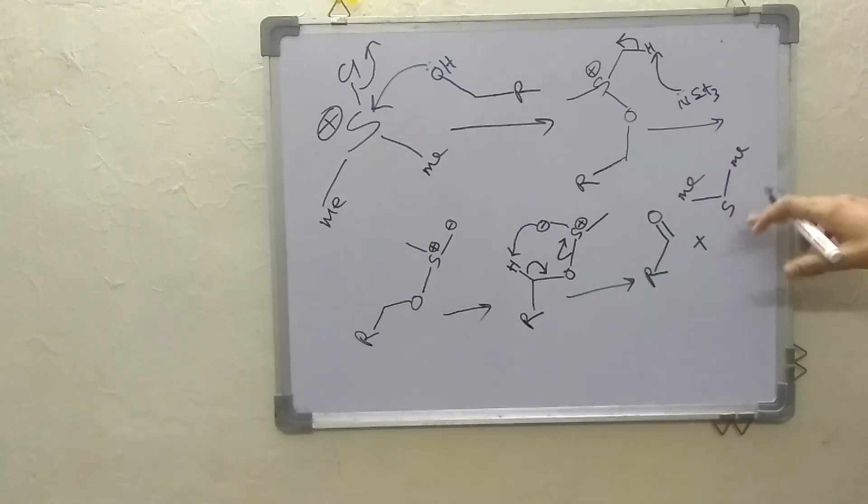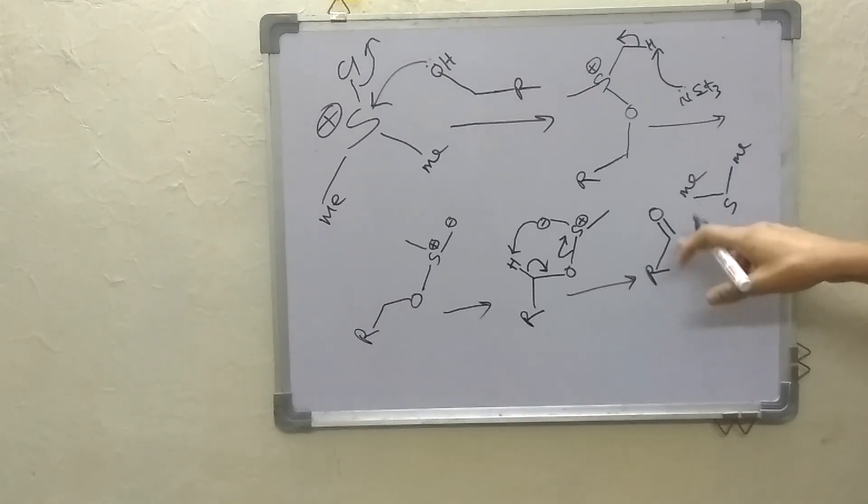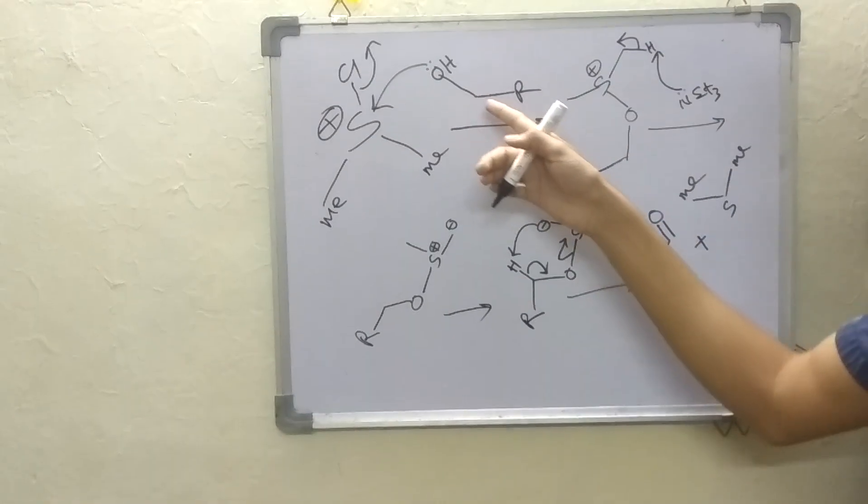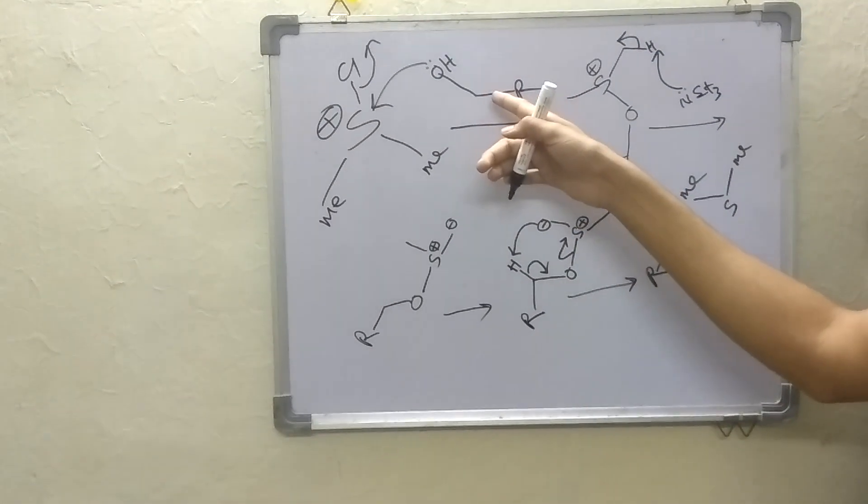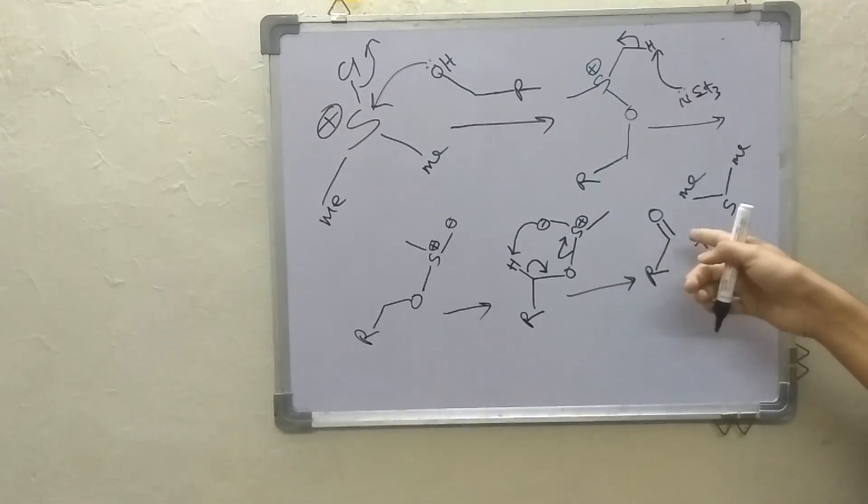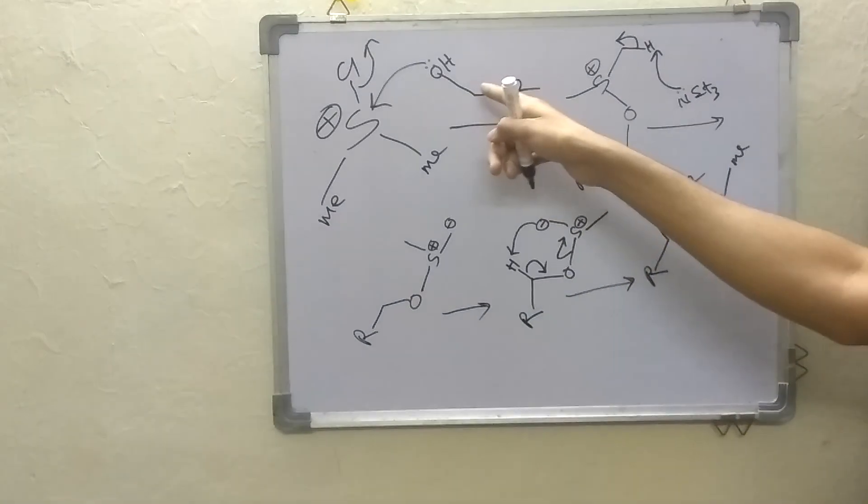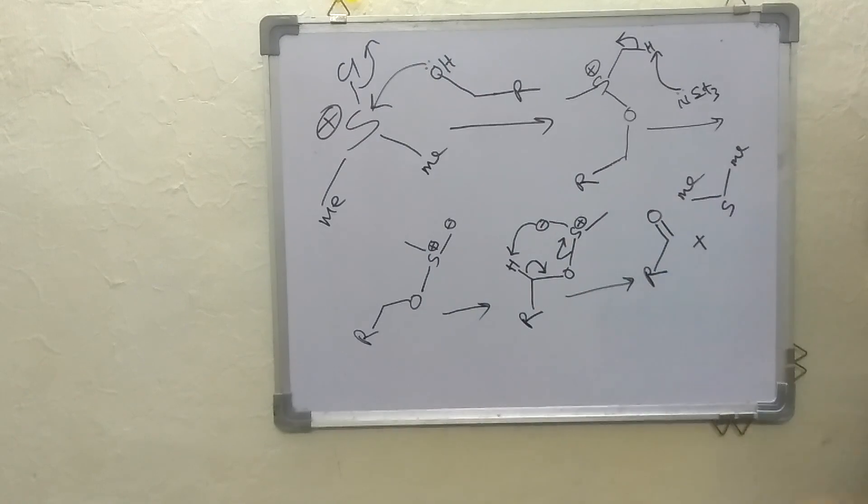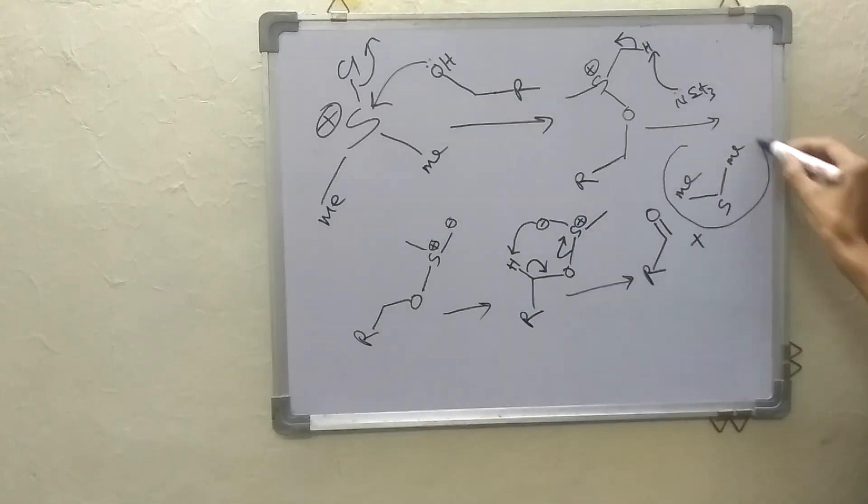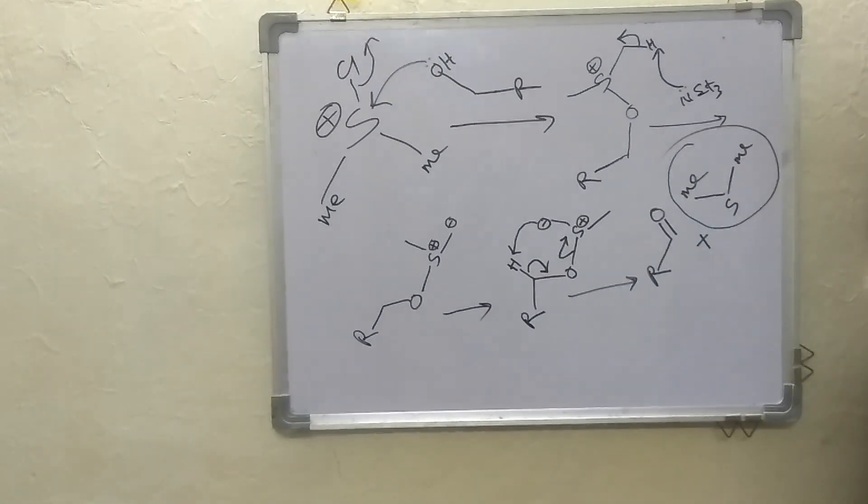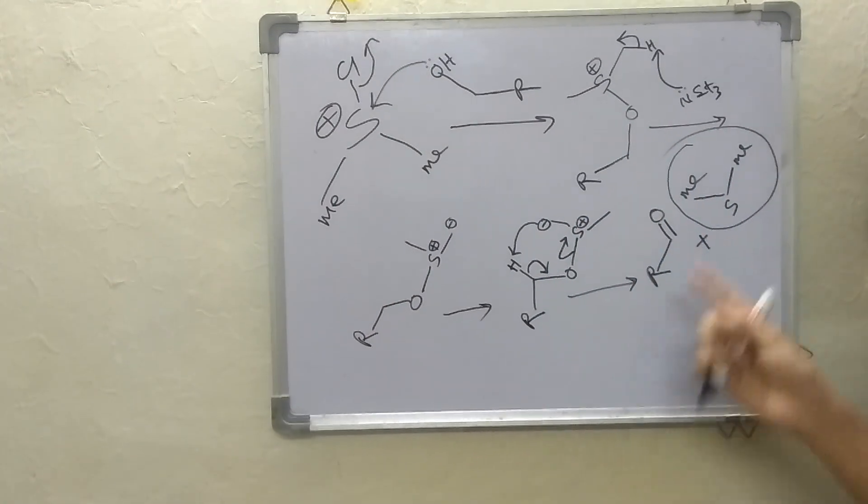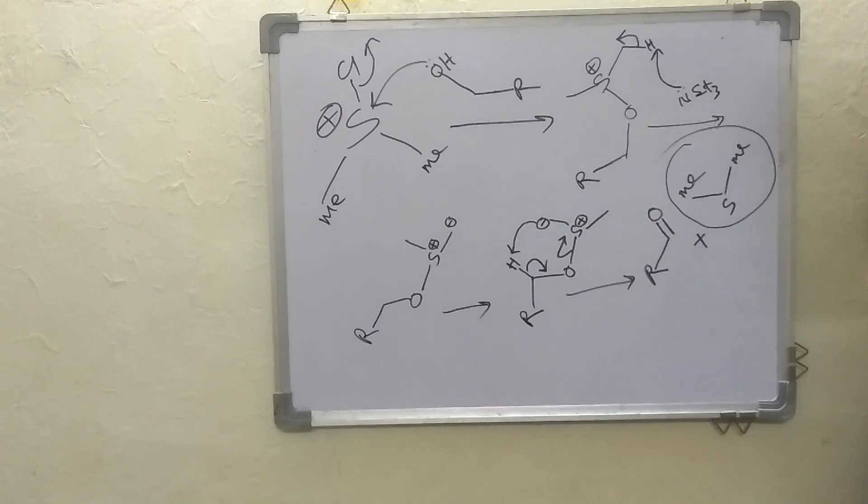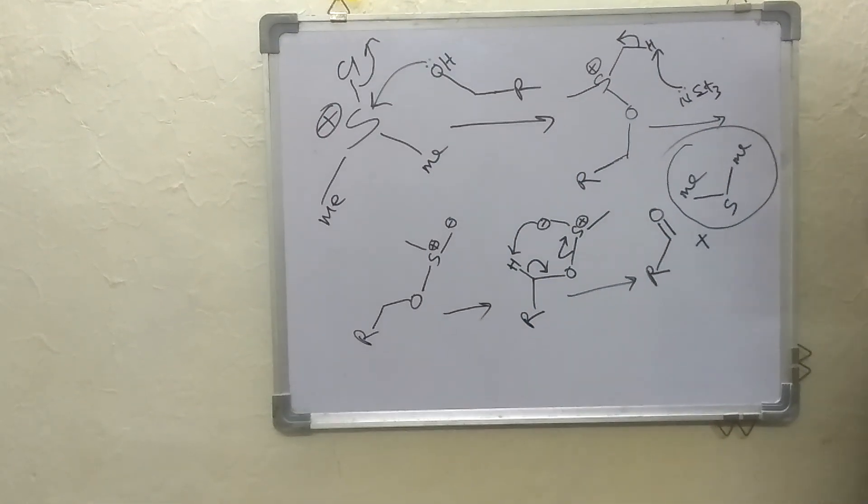This is dimethyl sulfide and we get our desired aldehyde. So if we start from secondary alcohol then we would get ketone but as we started from a primary alcohol we would get aldehyde. And this compound dimethyl sulfide has a very bad smell so you should be careful while doing this reaction. So this is the whole story behind the Swern oxidation.